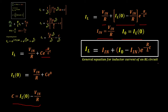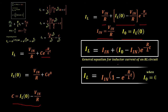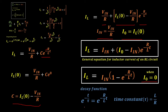In this general equation, when I_0 is equal to 0, we reduce our equation to I_L = I_IN · (1 − e raised to −(R/L)·t). Here, we observe a decay function of the form e raised to −t/tau, equivalent to e raised to −(R/L)·t, so our time constant tau is equal to L/R.